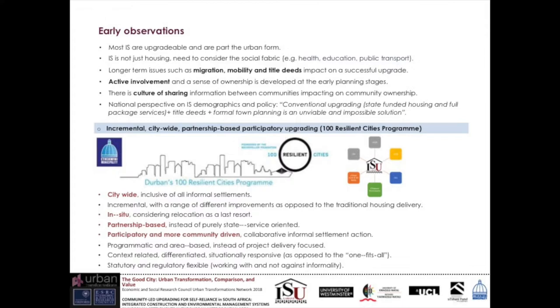To summarize what we've been trying to do in this project: first of all, we had to accept that informal settlements are definitely not a problem — they are upgradable and part of cities and urban reform. It's not just about provision of housing; it's about understanding the social processes and social fabric behind that. Active involvement is key to a sense of ownership, but unfortunately this is something that must be developed in the early planning stages. If you don't involve people actively from those early stages — and how to do that remains a very big open question — it is really difficult to talk about community-led upgrading.